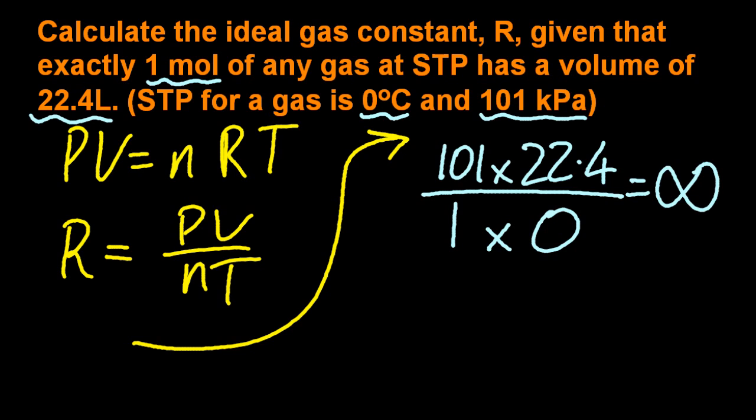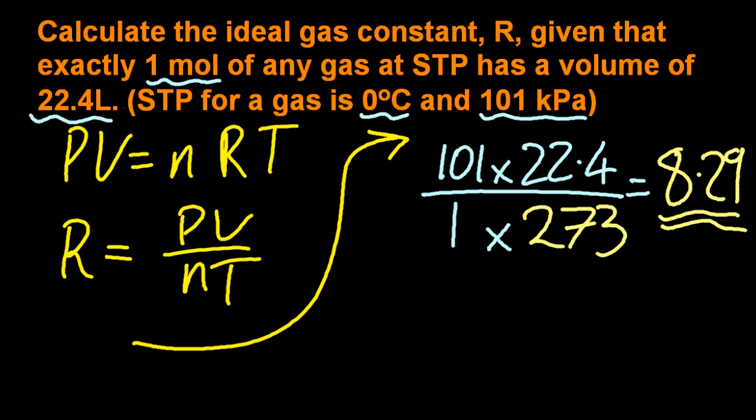If you get an infinity in physics, that might be okay. But in chemistry, infinities are always going to be bad. So I forgot to convert to Kelvin. Right. And I fixed that up. So I get 8.29.